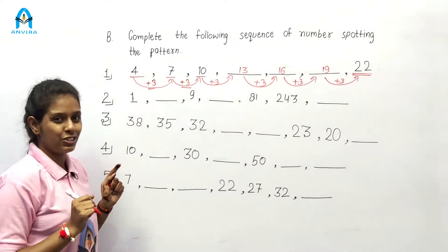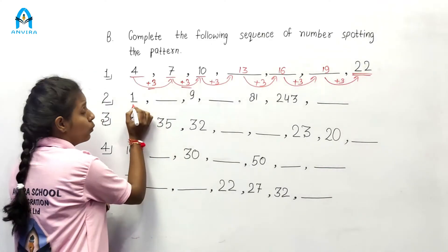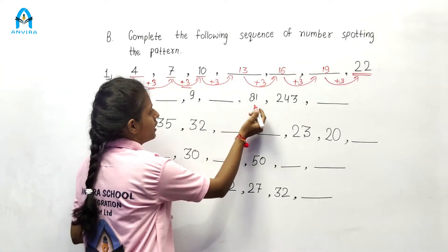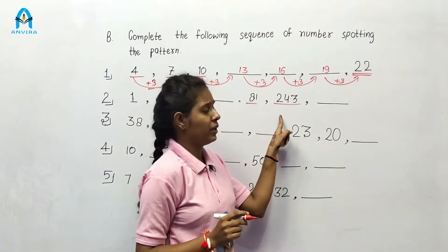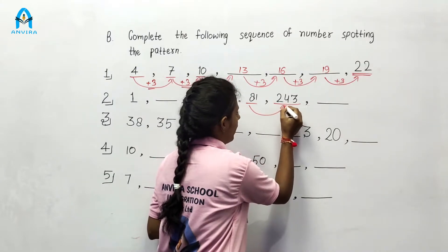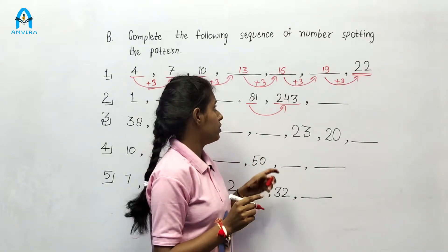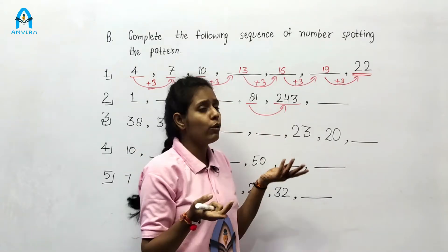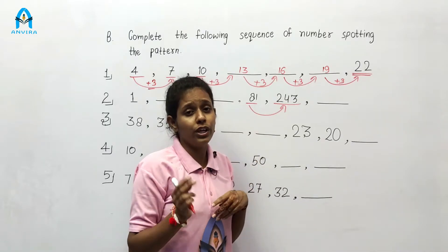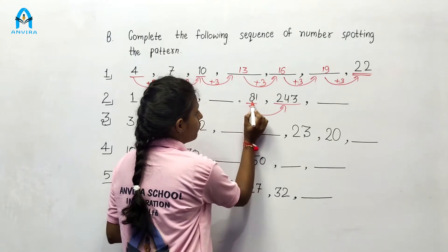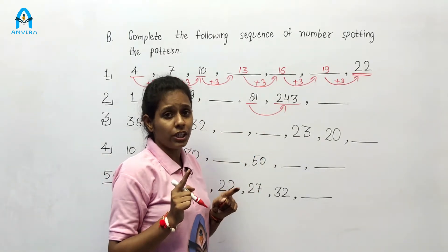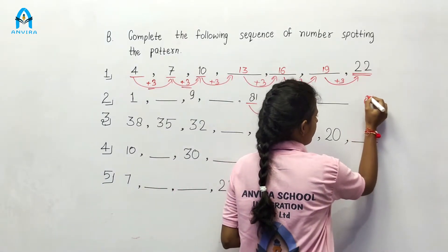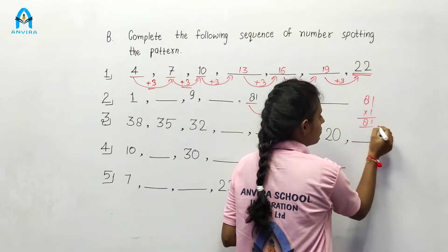Let's go to question number 2. We want to make a relation between 81 and 243. When we have small numbers, we use addition. But when we have big numbers, we use multiplication. So which number will we multiply by 81 to get 243? Let's start with the smallest number. Multiplying 81 by 1 gives 81.